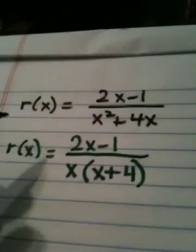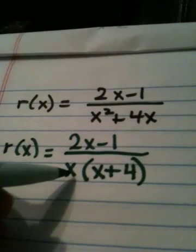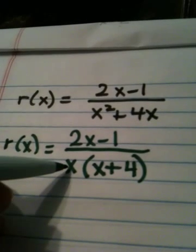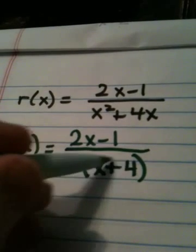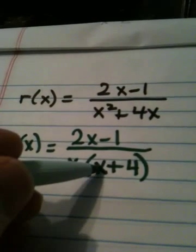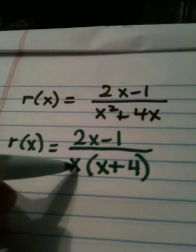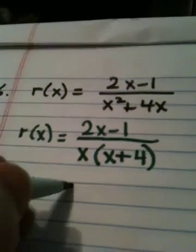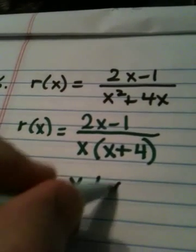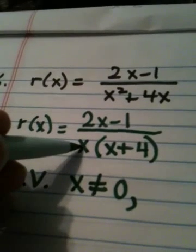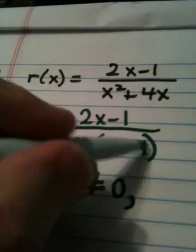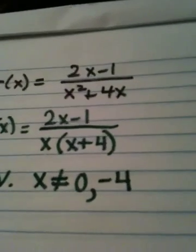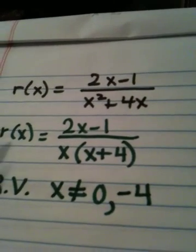So there are two factors. This factor would become zero. This factor would become zero if you use zero. This factor would become zero if you used negative 4. So because we have two factors, we have two RVs. The first RV, x cannot be zero. This x could not be zero. And here, this x cannot be negative 4. So in this case, what did we do?